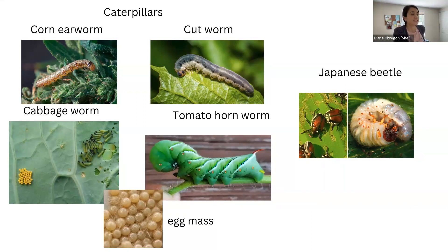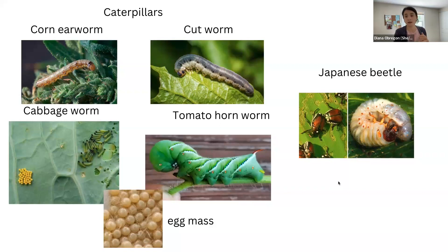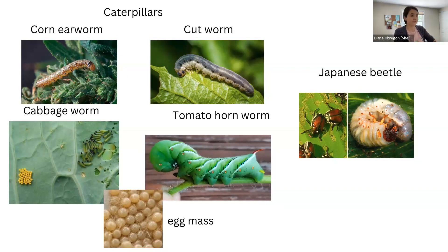Some other larvae that can be detrimental to your plants are the grubs of the Japanese beetle. The adults are easily recognized and they make some damage, but the grubs can affect the grass — you can start to see your grass turn yellow or die. If the grass is easily lifted and you look at the roots, you might find Japanese beetle grubs.